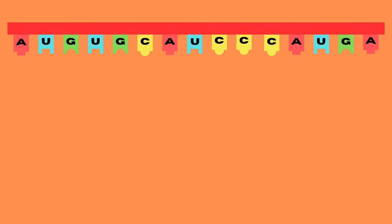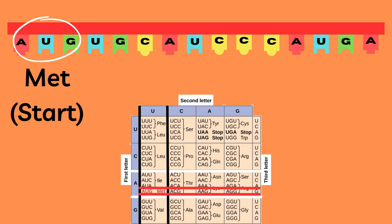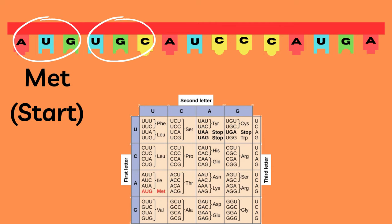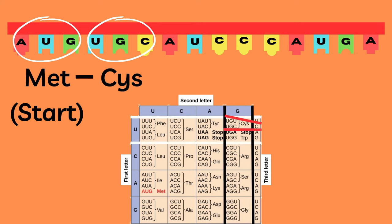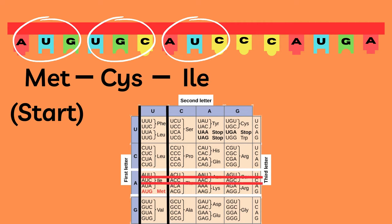Starting with the codon table, we simply read it from left to right. The start codon codes for methionine. The second triplet is UGC — by looking at the table here, here, and here, we can see that the second amino acid is cysteine. Then comes AUC. Now we look here, here, and here to see that the next amino acid is isoleucine.